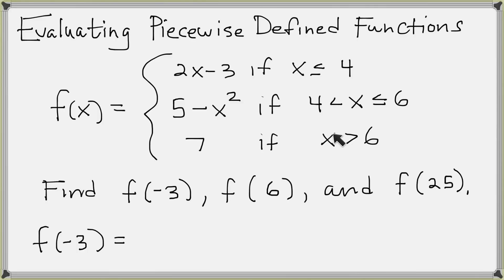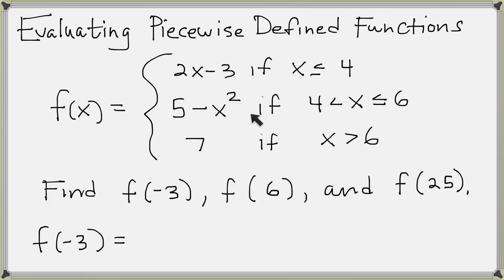Exactly one of these conditions will be true, assuming negative 3 is in the domain. What we do is replace x by negative 3 in each condition and see which one gives a true statement. Going to the first one — x is less than or equal to 4 — if we replace x with negative 3, we get: negative 3 is less than or equal to 4. That is a true statement.